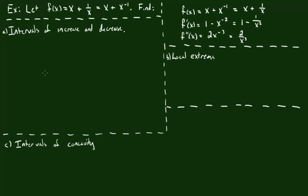Let's go ahead and start. I have the original function and both derivatives already finished here — it's a very simple derivative, nothing really crazy — and we're going to be using these to find all of these qualities.